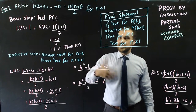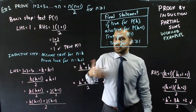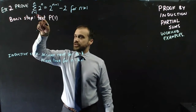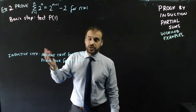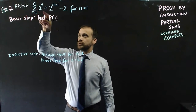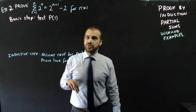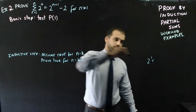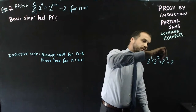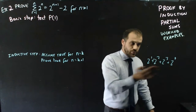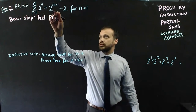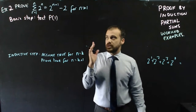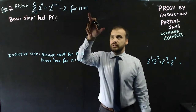Let's do another example so you can see the steps are really formulaic — you repeat them each time. This time I'm using summation notation, which you have a 50-50 chance of encountering. The statement is: the sum from r equals 1 to n of 2^r equals 2^(n+1) minus 2. So 2^1 plus 2^2 plus 2^3 plus 2^4 should equal 2^5 minus 2. Let's do the basis step and prove it's true for n equals 1.